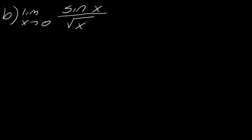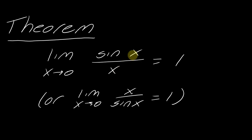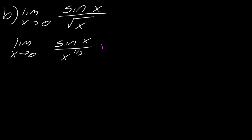Moving on to the next one. This one's a little bit tricky in how you have to manipulate it. What I really need is sine of x over x, and I do not have that — in fact, I have something with just the wrong exponent. I've got sine of x over x to the one half, and I don't want that. So I'm going to manipulate this so it says exactly what I need. You know you have to use the theorem because if you plug in zero, you're getting zero over zero. I'm going to multiply the top and the bottom by x to make this work.